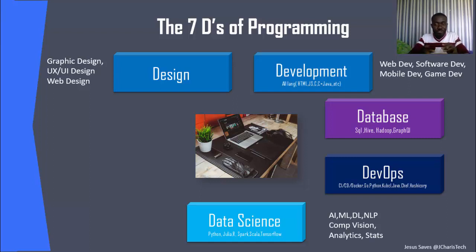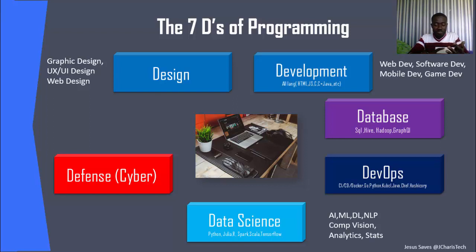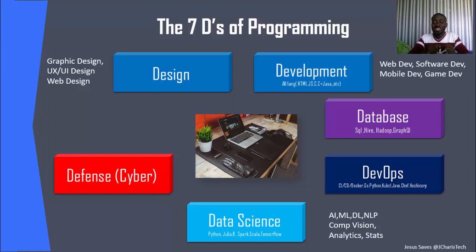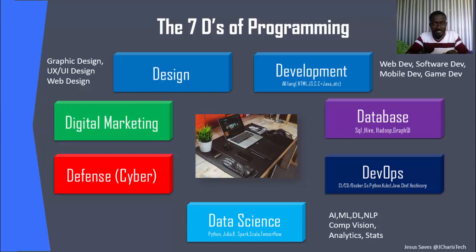The sixth D is Cyber — specifically cybersecurity — which is a very promising field that many people forget about. It includes cyber defense, penetration testers, and InfoSec engineers. You secure your products, databases, and systems. Languages used in cybersecurity include Ruby, Python, C, and even Assembly. It also pays very well.